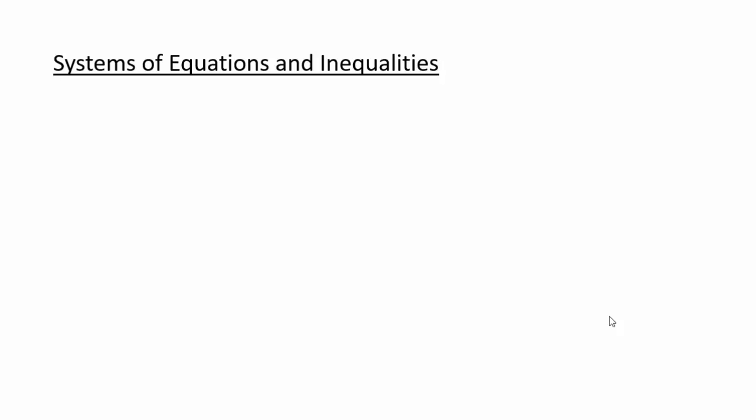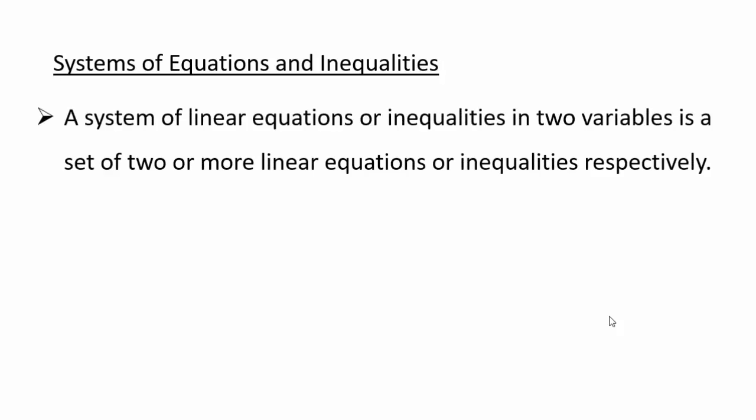So far we know that a linear equation in two variables represents a line. So an inequality gives you a region bounded by the line, either below the line or above the line. Sometimes you'll include the line, sometimes you will not. A system of linear equations or inequalities in two variables is a set of two or more linear equations or inequalities respectively.